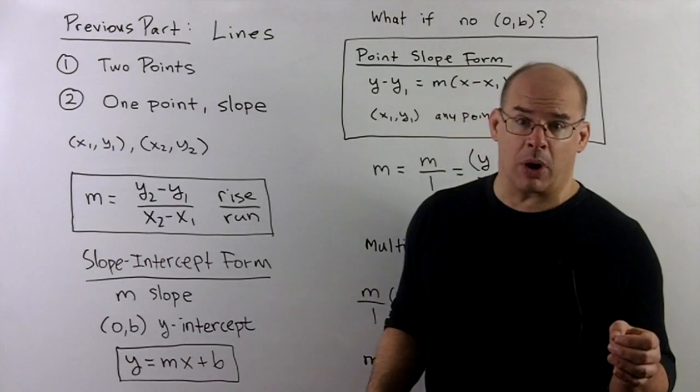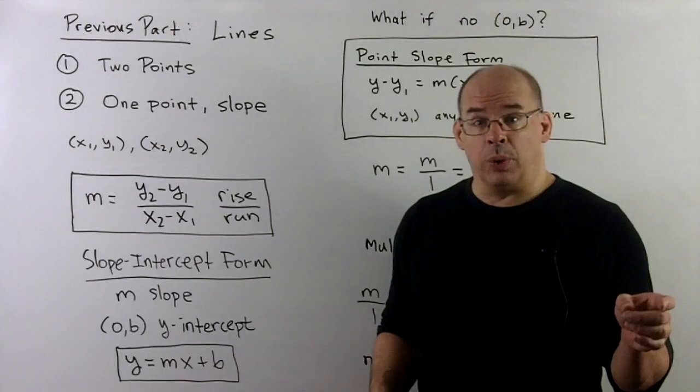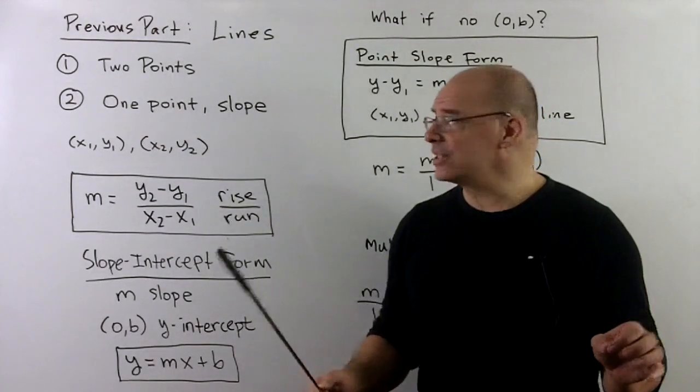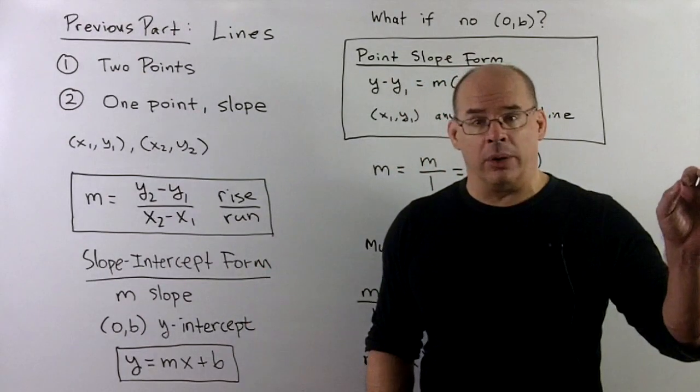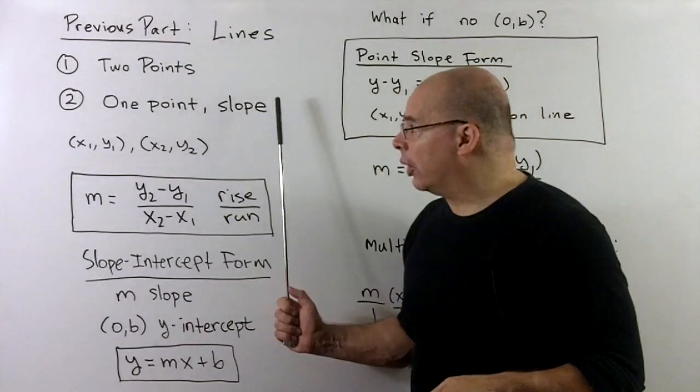Let's recap what we did in the previous part on lines. We're thinking of lines in two ways. We can think of it either as we pick two points, connect the dots, or if I have a single point, all I need to know is the angle of inclination as we go through the point. And then that's what we call slope.